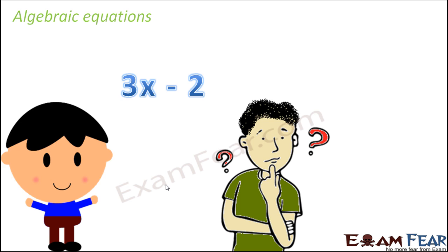Let's say I tell you: what is 3x minus 2? This is a mathematical phrase where you have constants like 3 and 2, variables like x, and operators like minus and multiply. So this is definitely an algebraic expression. Now, can you find out the value of the variable x? 3 and 2 are constants, so they have fixed values, but x can have any value that we want.